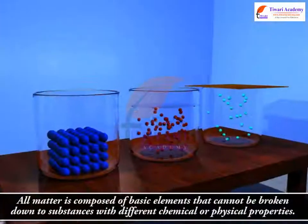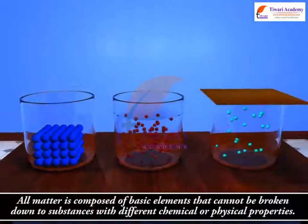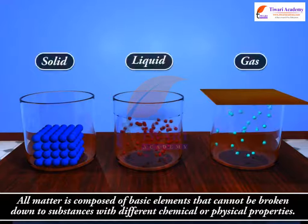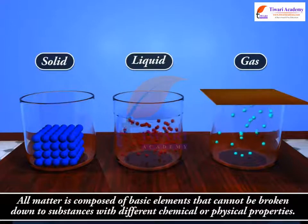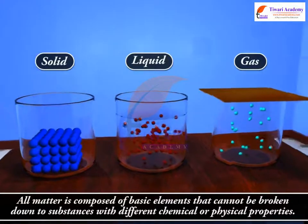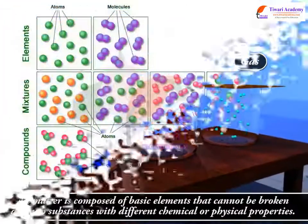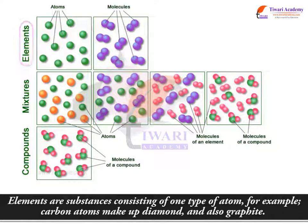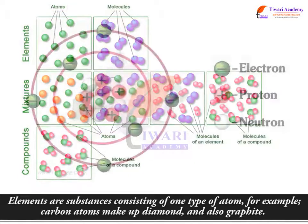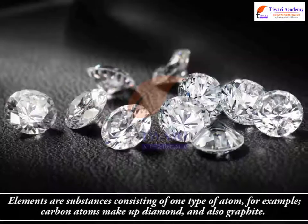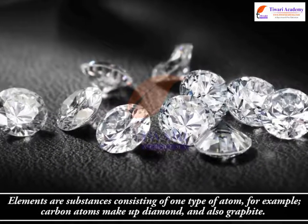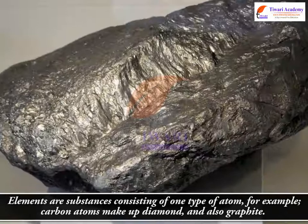All matter is composed of basic elements that cannot be broken down to substances with different chemical or physical properties. Elements are substances consisting of one type of atom. For example, carbon atoms make up diamond and also graphite.